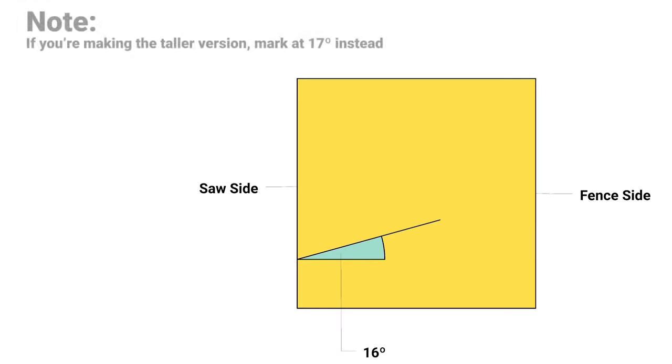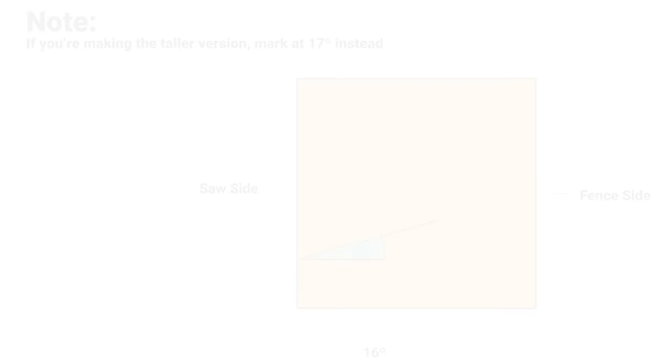With that done, I'm going to mark out a 16 degree angle somewhere towards the back of my sled, like you see in this drawing. And by the way, all of these 16s are just coincidental. Don't read too much into that.